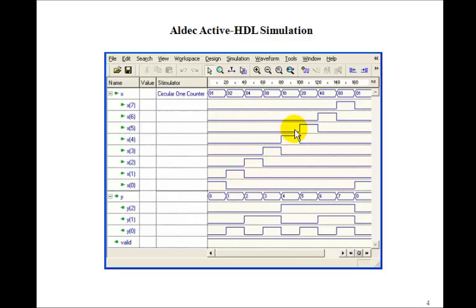So that's what we want for this input test. And the output, sure enough, ends up being 0 to 7. So it encodes which 1 is 1. In this case, valid is 1 for the entire time.